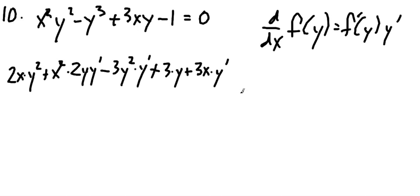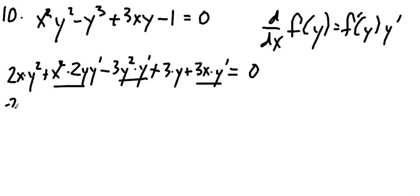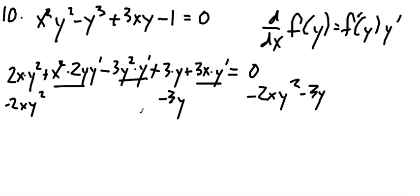Minus 1 is a constant so its derivative is 0 — I'm not even going to bother writing that — and this is all equal to 0. Now I want to solve for y prime. I've got three terms that have y prime as factors; I'm going to leave them on one side and subtract the others over to solve for y prime.